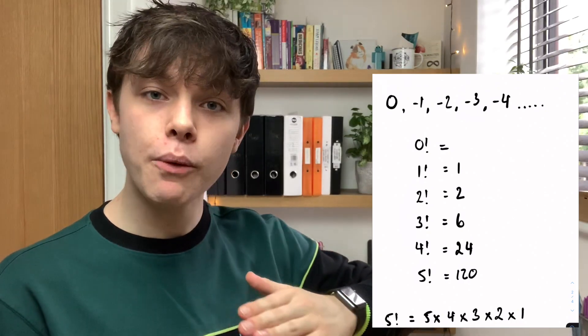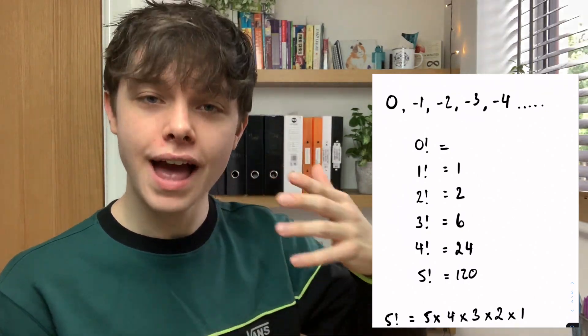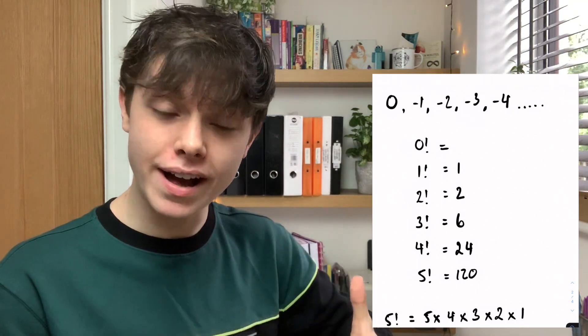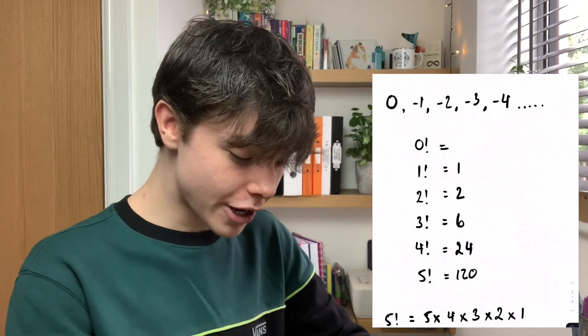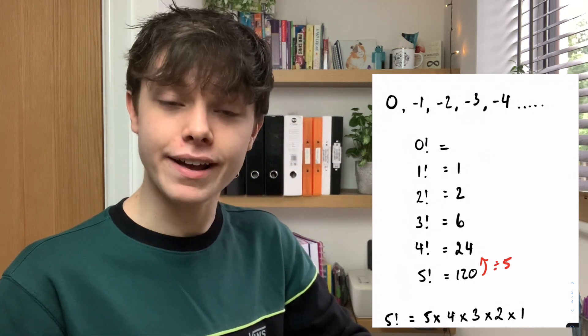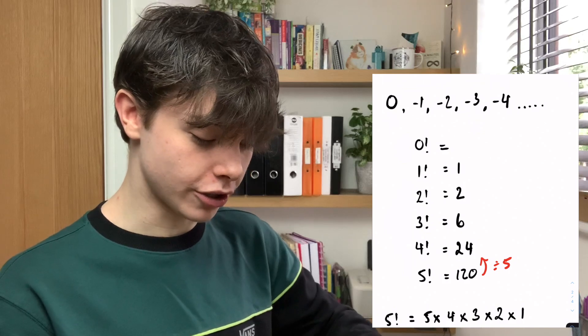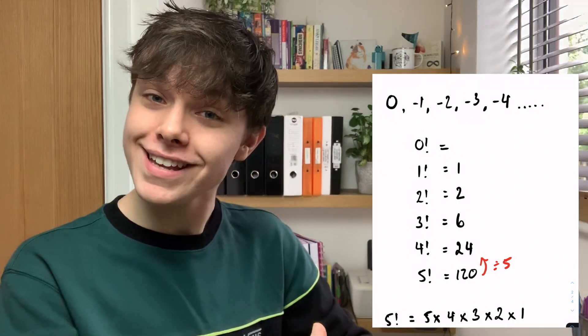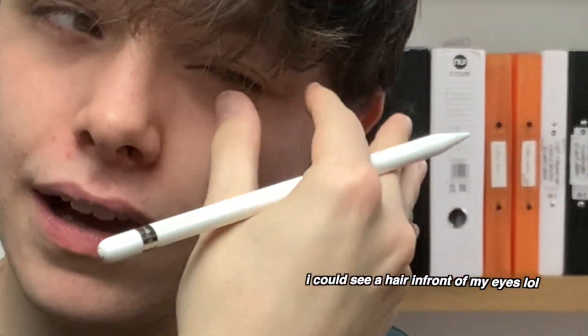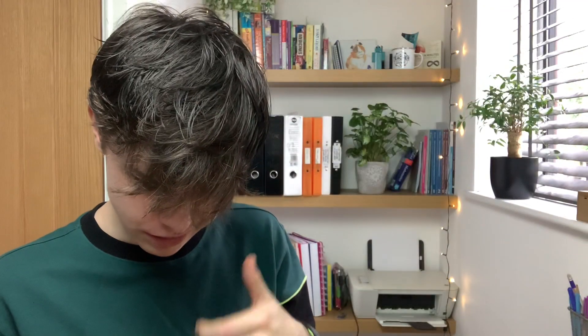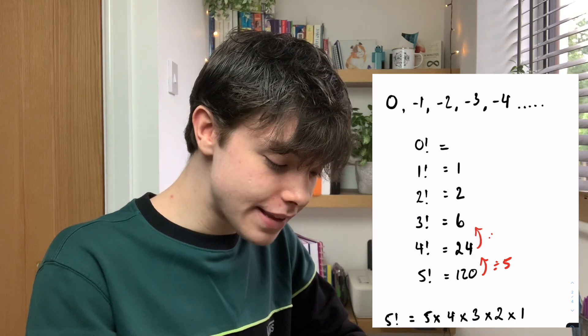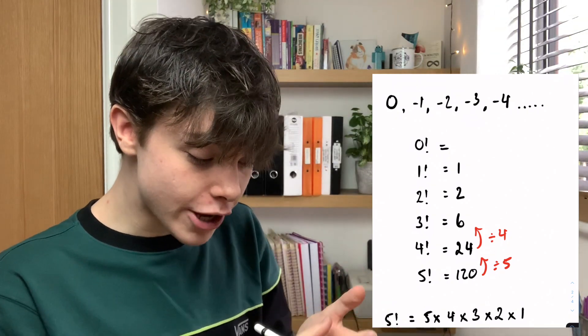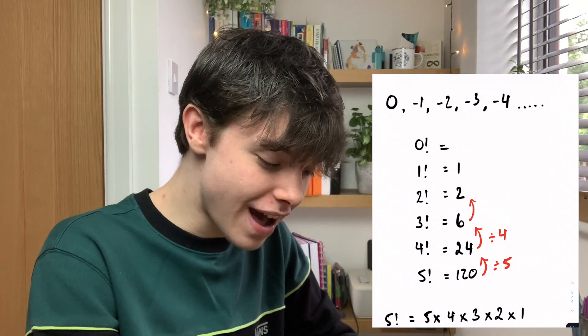Now, what I'm going to do is I'm going to work backwards and I'm going to see how we can go from 5 factorial to 4 factorial. We can see to go from 5 factorial to 4 factorial, we're going to divide by 5 because 120 divided by 5 is 24. So, I can add a little arrow and say divide by 5. Now, I'm going to have a look and see how we can go from 4 factorial to 3 factorial. To do that, we're going to divide by 4 because 24 divided by 4 is 6. So, I can put an arrow and say divide by 4. Now, let's have a look at how we can go from 3 factorial to 2 factorial. Well, 6 divided by something gives us 2. That something is 3. So, I'm going to divide by 3.